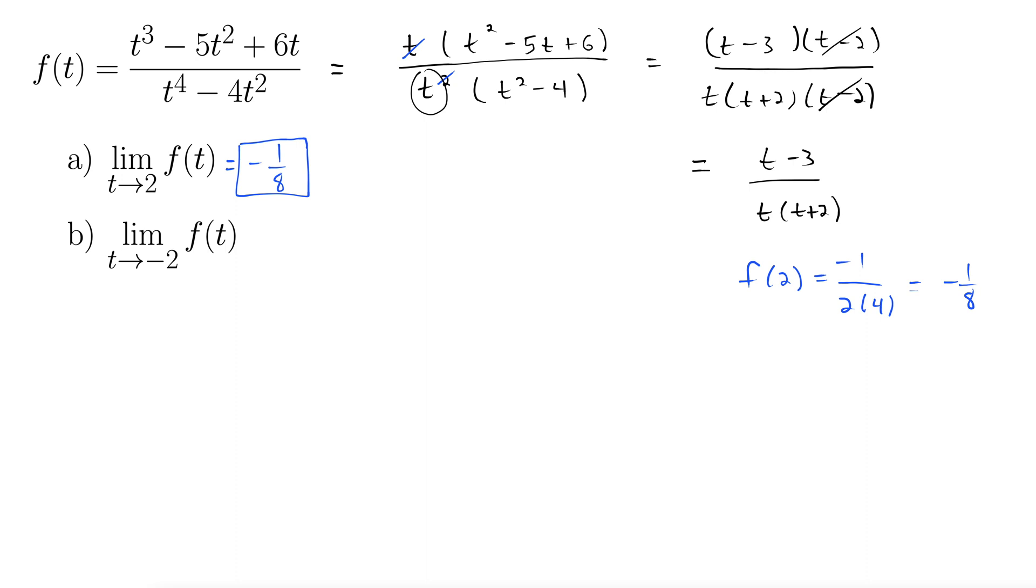Now you may be saying but if we plug in 2 right here we would get 0 in the denominator thus it would be undefined. That's fine, right? The limit doesn't care what actually happens at the point 2. The limit only cares what happens as we get infinitely close to 2. So all bets are off when we actually hit t equals 2, but we're just seeing what happens as we approach in on 2.